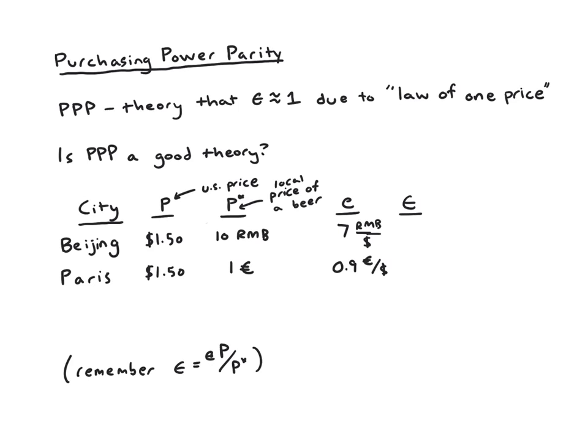For the first example with Beijing, we'd multiply E times P. So that's a buck fifty times seven, and then divide by ten. That works out to be just a little bit over one, like 1.05. So since epsilon is bigger than one, it means beer is just very, very slightly cheaper in Beijing than in the US - this is actually Boston prices, not just US prices.